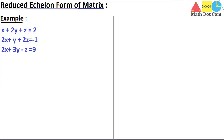Today we are going to see another method of solving a system of non-homogeneous linear equations, that is the reduced echelon form of a matrix. As its name indicates, it is also related to the echelon form. Keep in mind that the echelon form and reduced echelon form are methods used to solve a system of linear equations — to find the value of x, y, and z.